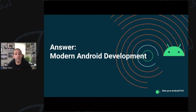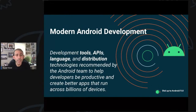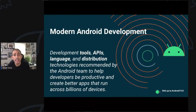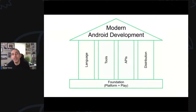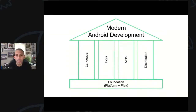With those problems understood, let's move to the final answer: modern Android development. Modern Android development is basically the development tools, APIs, language, and distribution technology recommended by the Android team to help developers be productive and create better apps that run across billions of devices. Modern Android development is built on four main pillars: language, tools, APIs, and distribution.